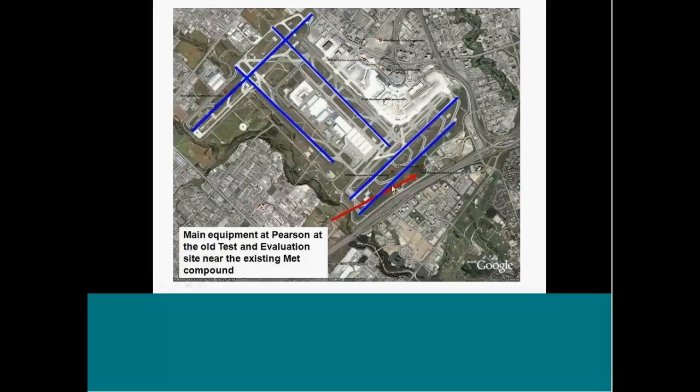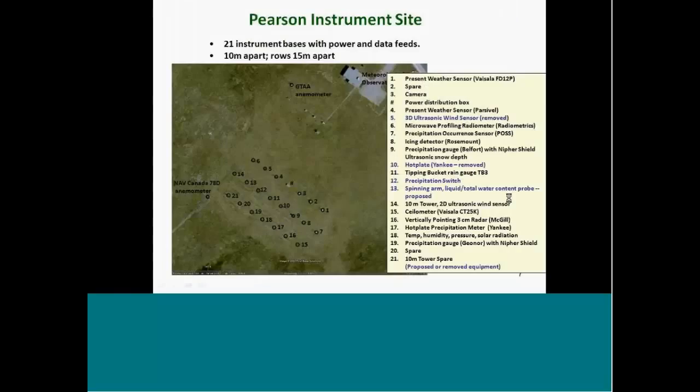This just shows you Toronto International Airport. We have a MET compound here, the blue are the runways at the airport. And it's close to the existing MET compound at the airport. We have 21 instrument bases with power and data feeds, and we've got a wide variety of instruments on those data feeds, including the standard stuff like winds and temperature, pressure, and relative humidity, cameras, and so forth. We also have ceilometer of visibility meters, and many different precipitation gauges.